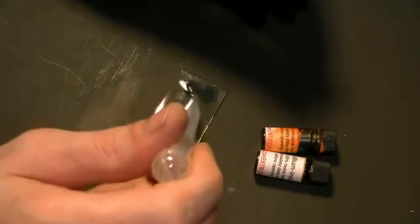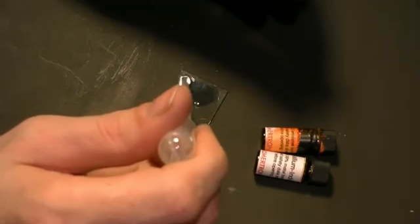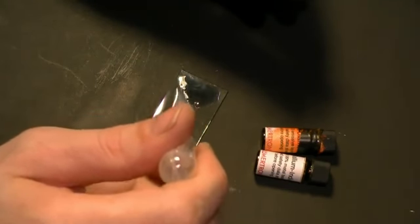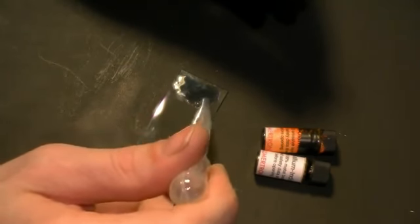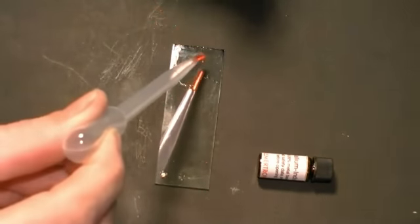First, I add the hole transport layer to the conductive side of the glass. This will bring holes to the emissive layer. And I let it dry. And next, I add a couple drops of the ruthenium emissive layer.